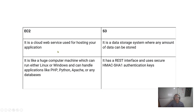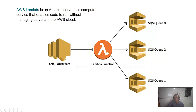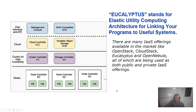The basic difference between EC2 and S3: EC2 is a cloud web service for running applications, while S3 is only for data storage using a REST interface. Amazon also offers the latest serverless facilities through Lambda functions — which is a name given by Amazon, different from Python lambda functions. This is deployed from 2009 onwards.